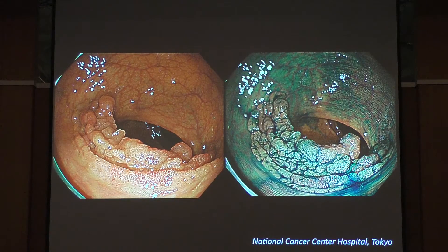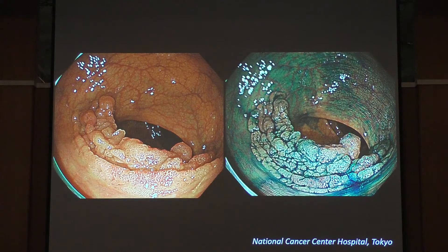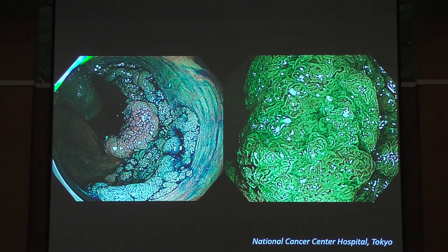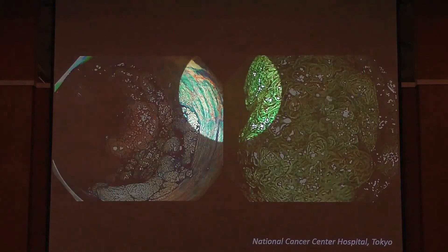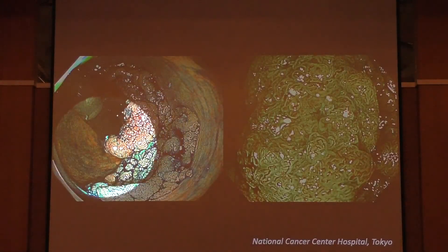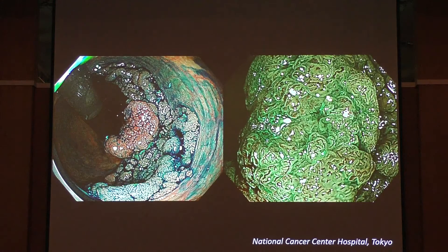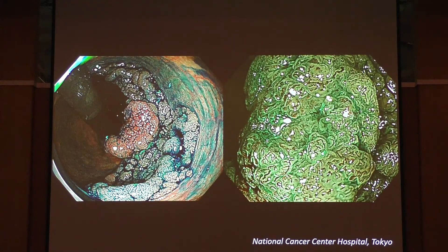First of all, I would like to emphasize the importance of visualizing the whole image of the lesion. In the straight view, we initially wanted to perform ESD, but we needed to visualize the whole lesion. Sometimes we need to perform retroflexion view safely. In that case, we can visualize a reddish nodule and must focus on it. The magnified NBI image shows irregular running vessels and an irregular surface pattern.